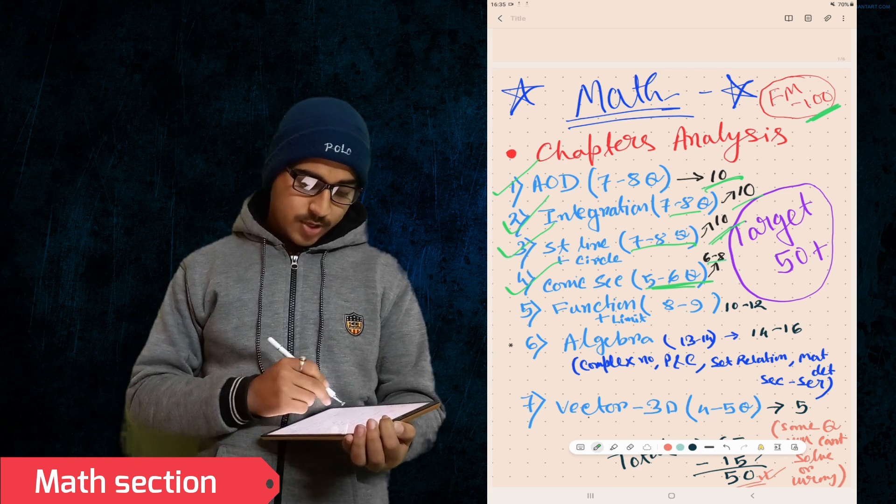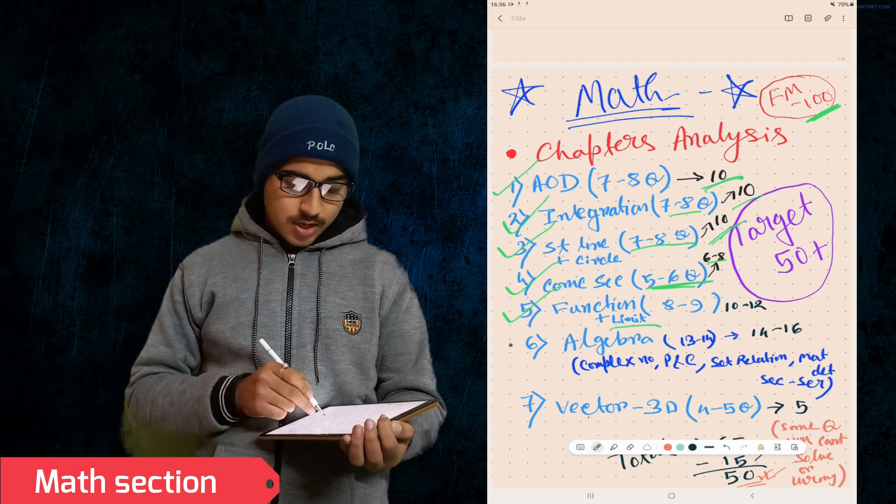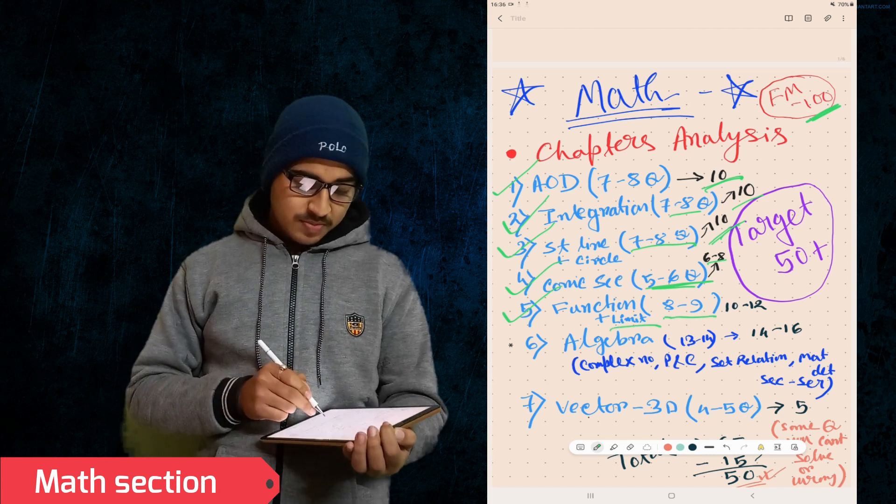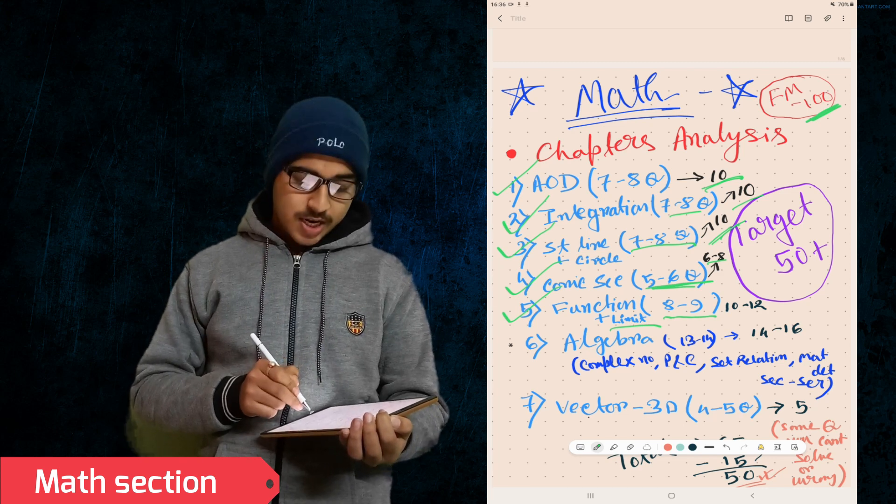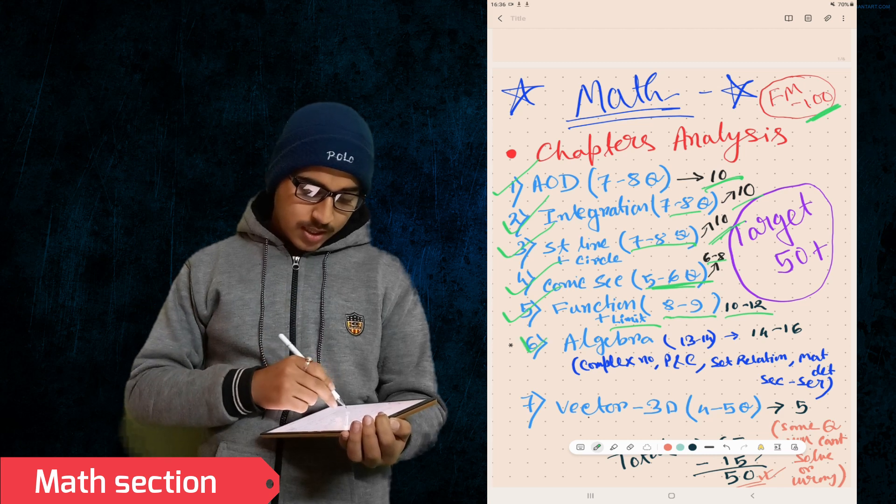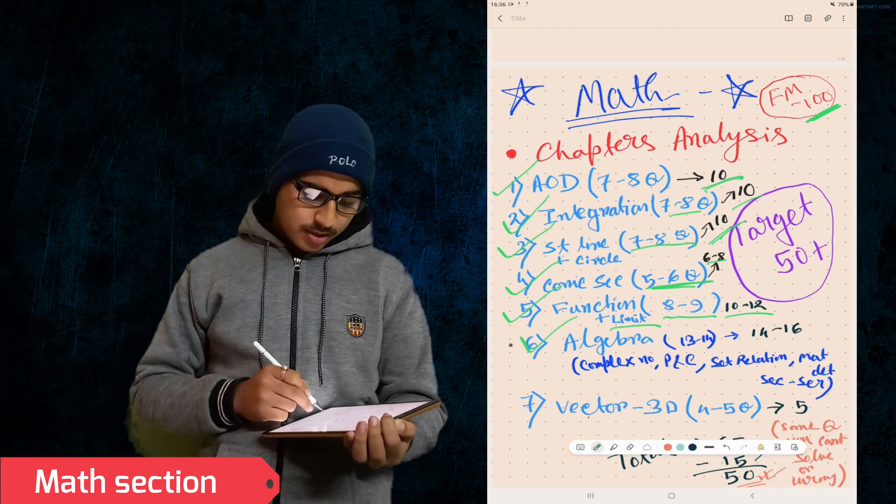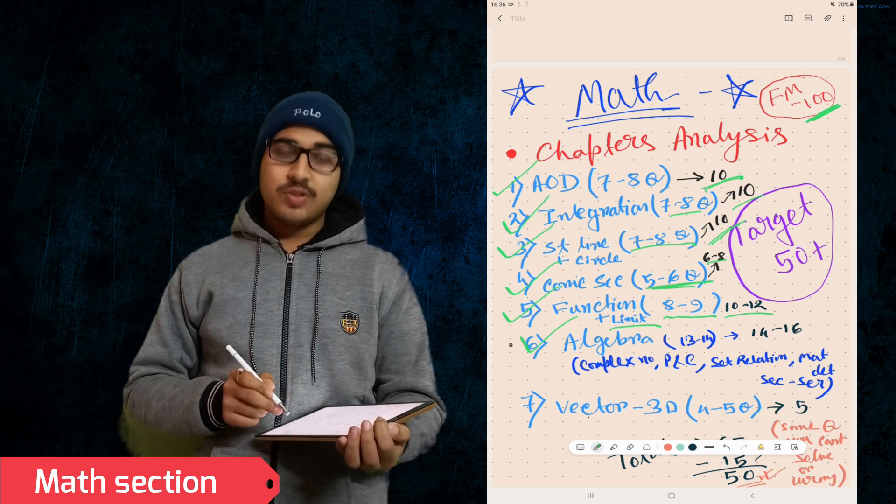Then comes Function and Limits. This is a very important section. You can get around eight to nine questions, so 10 to 12 marks from this chapter. Then comes Algebra. In Algebra there are 13 to 14 questions.